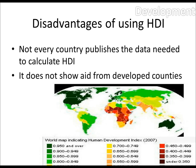However, there are some disadvantages. Not every country publishes the data needed to calculate HDI. On this map, Somalia on the east coast of Africa is grey, and that means when they made this map they didn't have enough information from Somalia and from their government to add them onto the map.